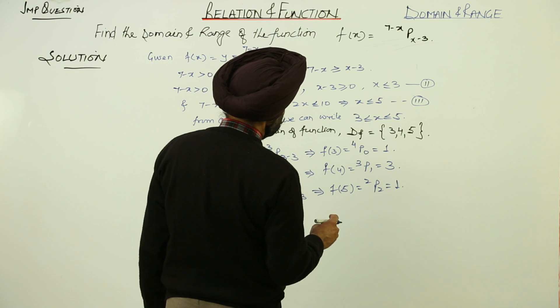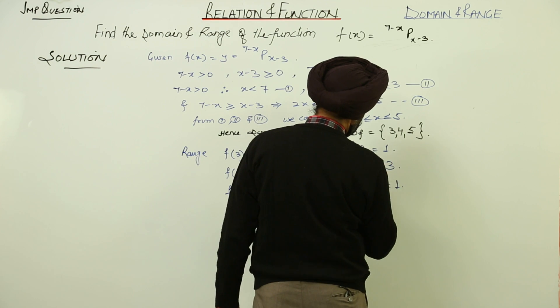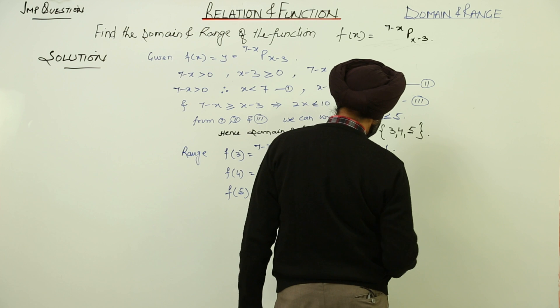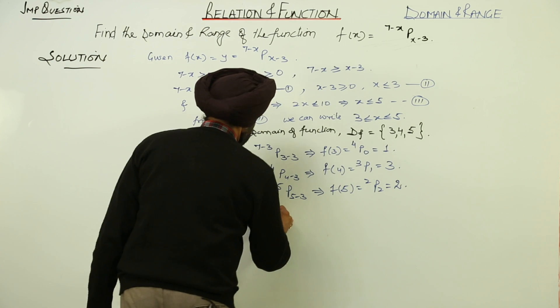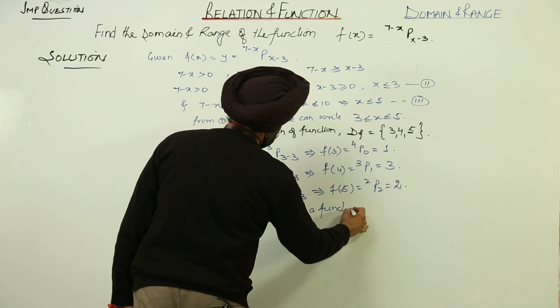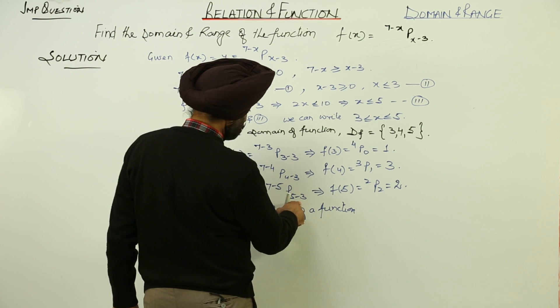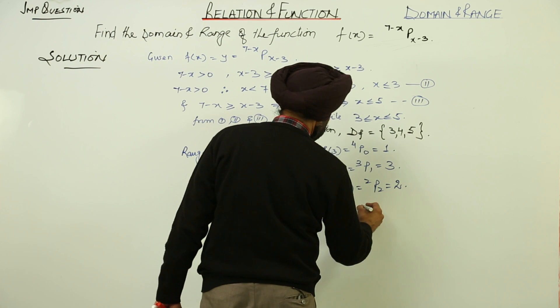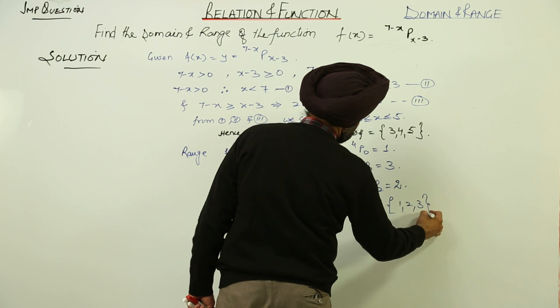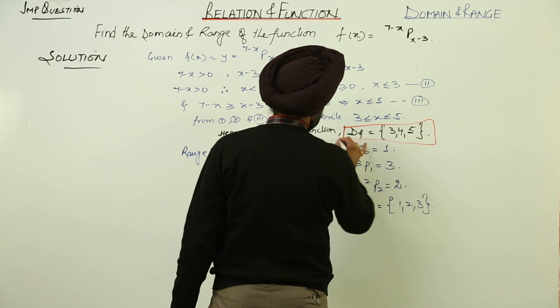So, we are having now 4P0 and 3P1. 3P1 is 3. 2P2 is 2. Range of a function is equal to 1, 2, 3. So, we are having now domain and range.